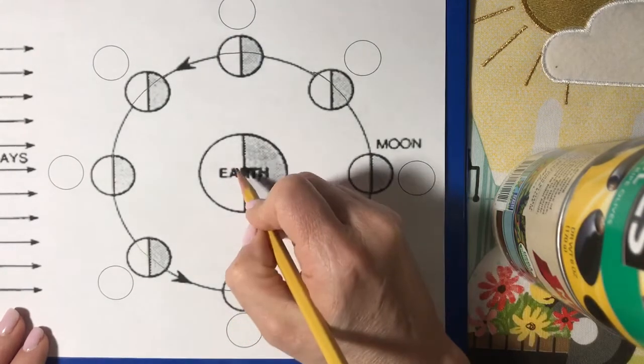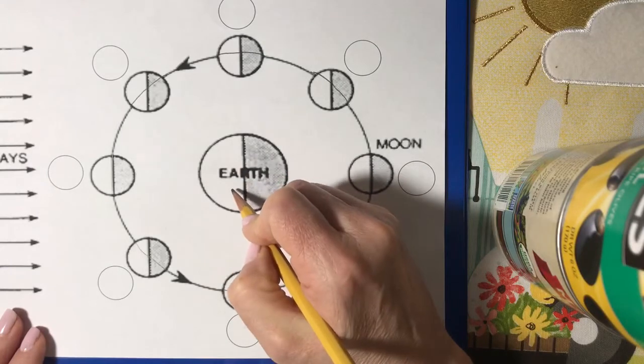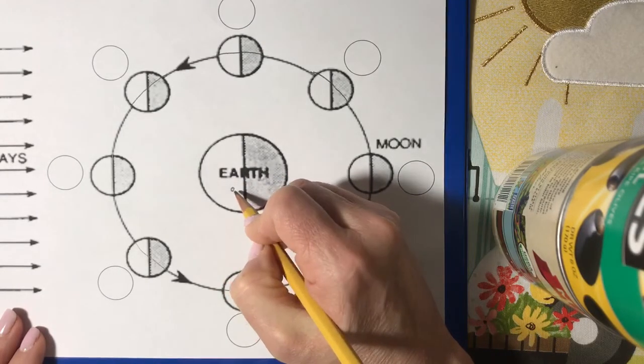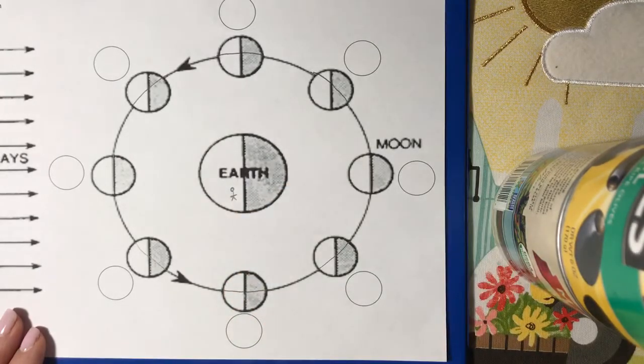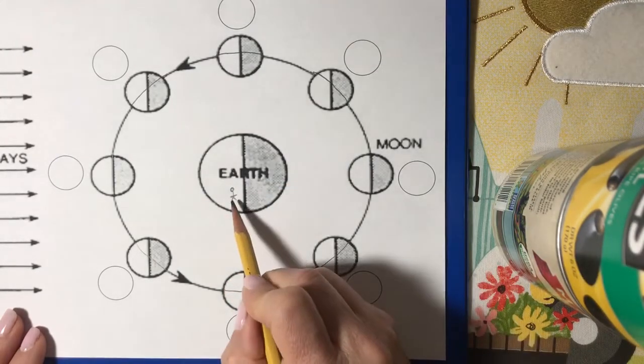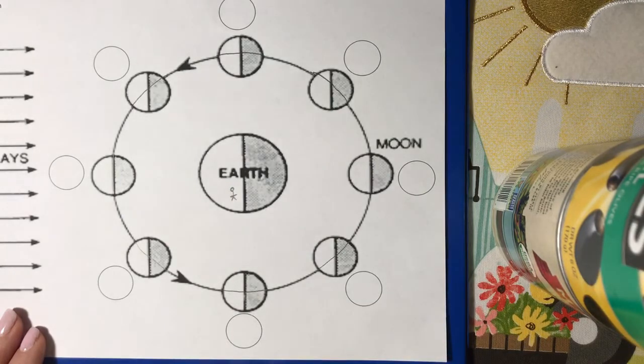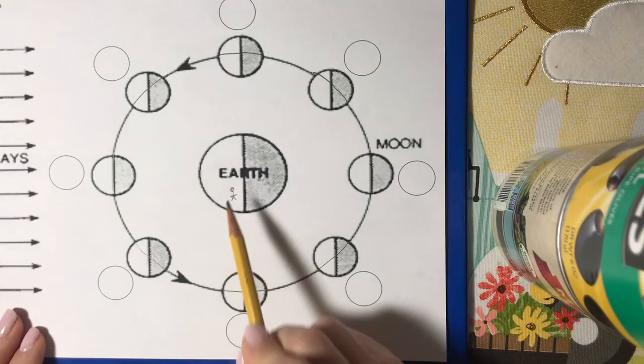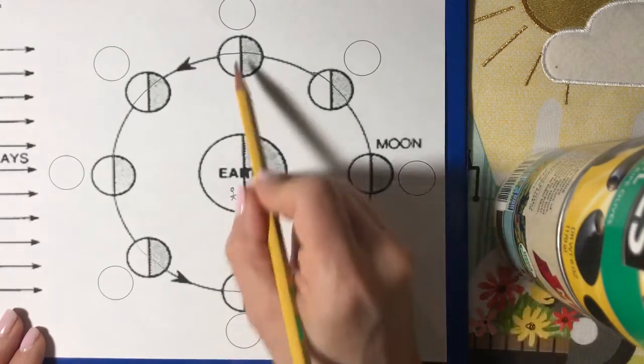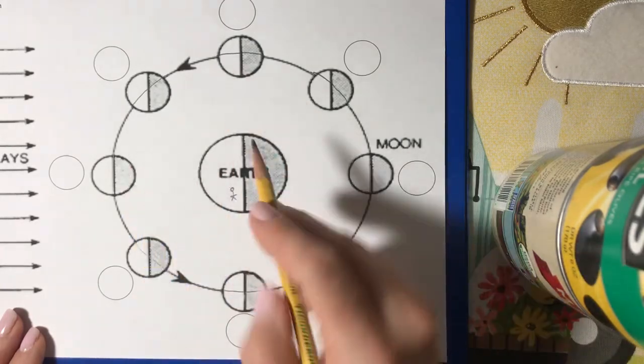So I'm pretending I'm an observer standing here on Earth at about 41 degrees latitude, which is New York, Long Island. So here's me, and I'm pretending I'm looking at the moon. This is the northern hemisphere.